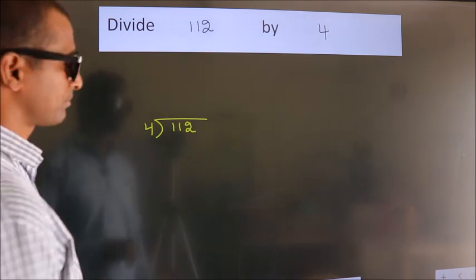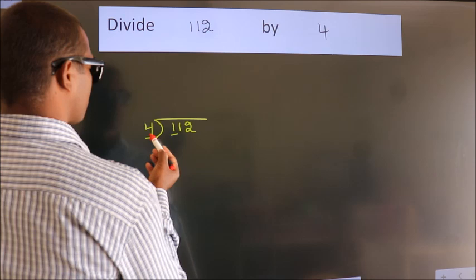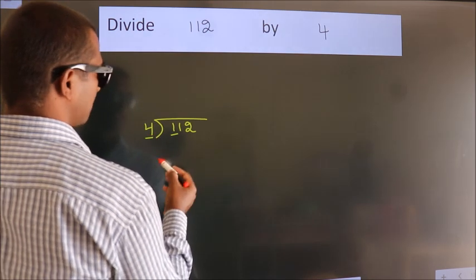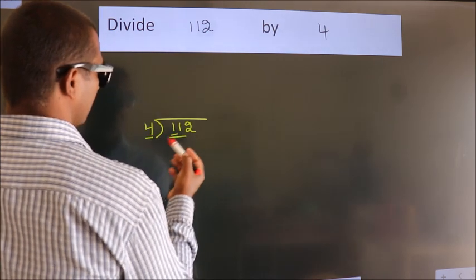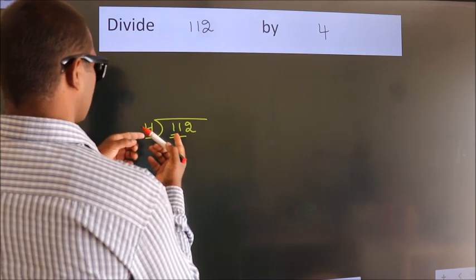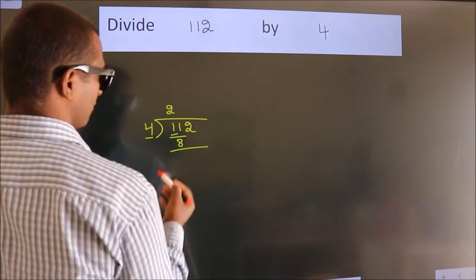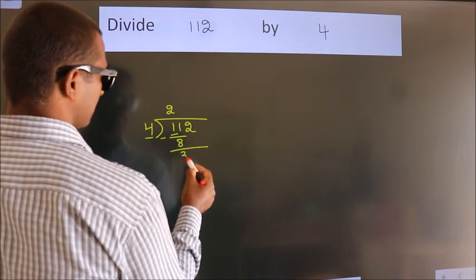Next. Here we have 1, here 4. 1 is smaller than 4. So we should take 2 numbers, 11. A number close to 11 in the 4 table is 4 2's, 8. Now we should subtract. We get 3.